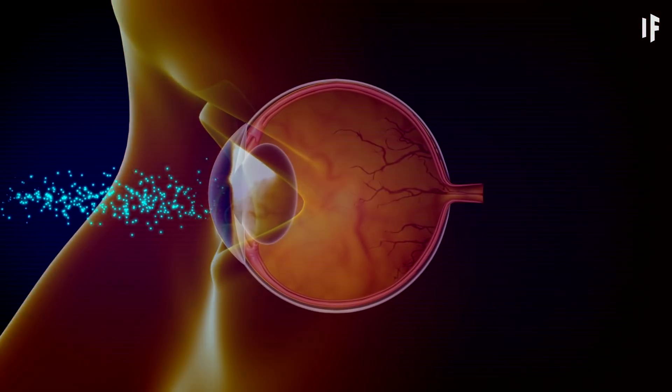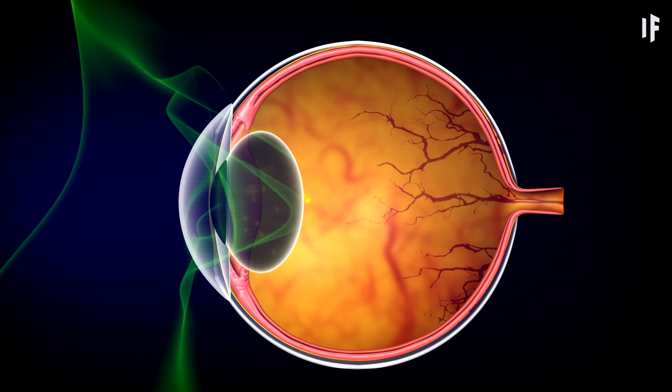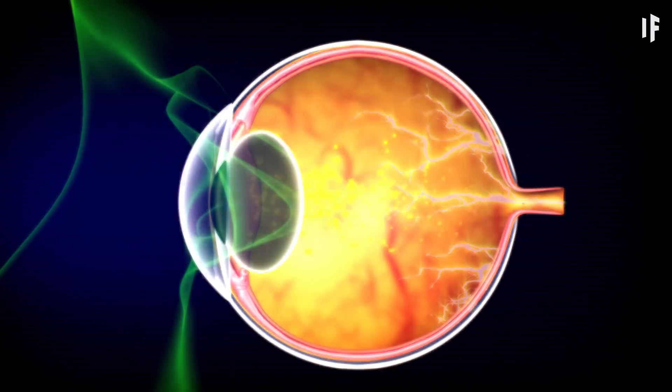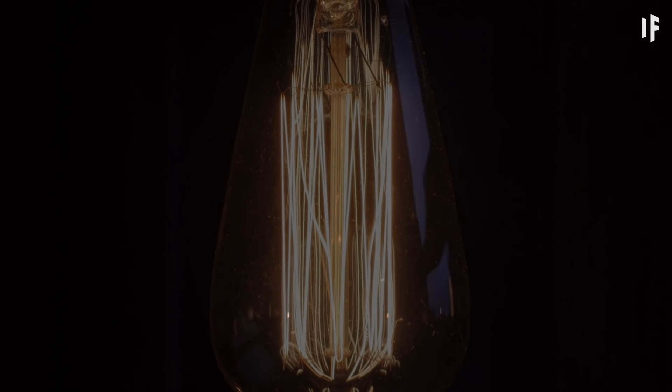Everything that we can see in the world around us is based on light entering our eyes. If an object doesn't emit or reflect light, then our eyes can't see it.